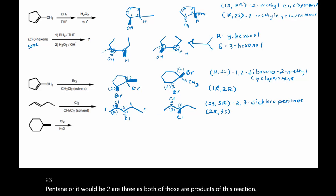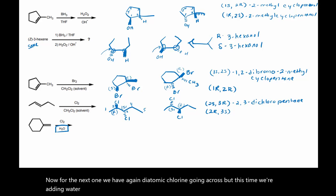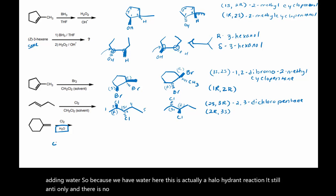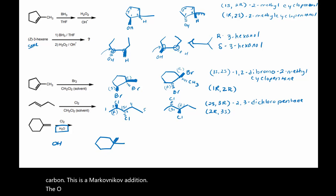Now for the next one, we have diatomic chlorine going across, but this time we're adding water. So because we have water here, this is actually a halohydrin reaction. It's still anti-only and there is no rearrangement. But the OH is going to go to the more substituted carbon — this is a Markovnikov addition.